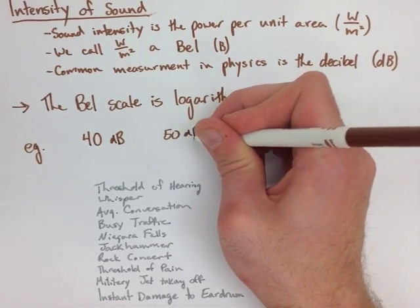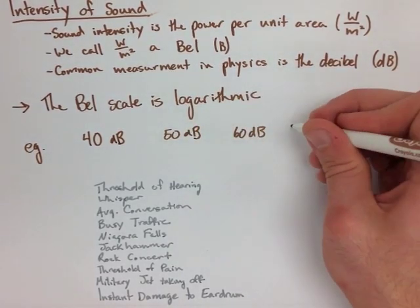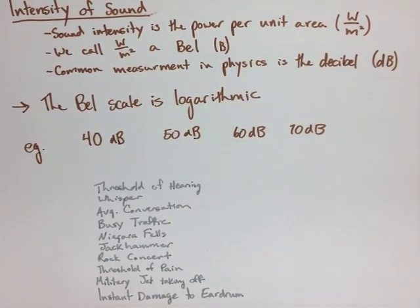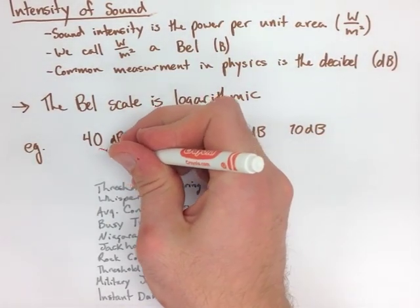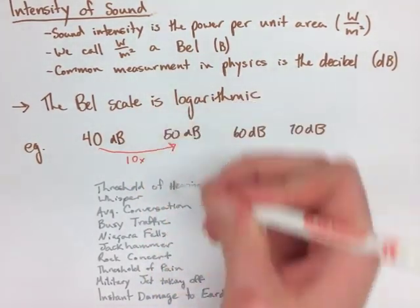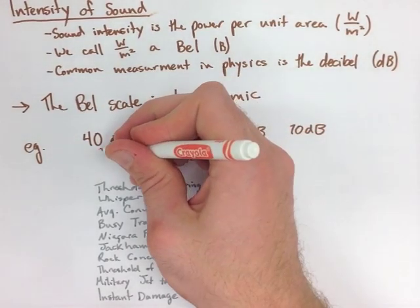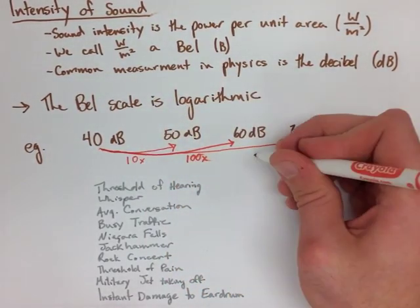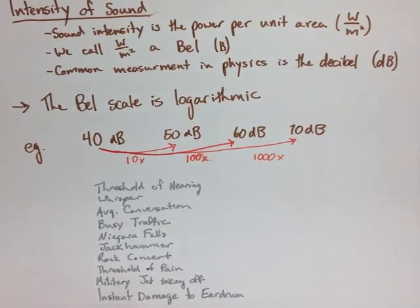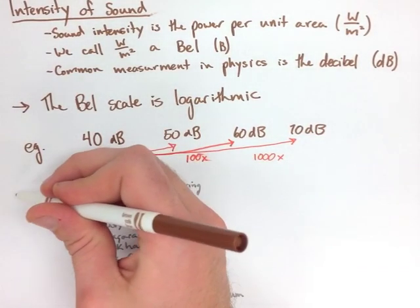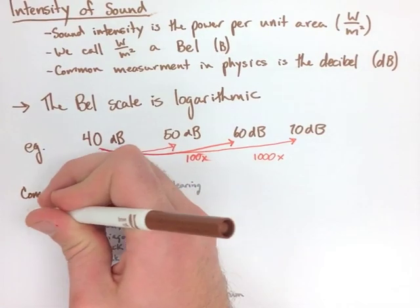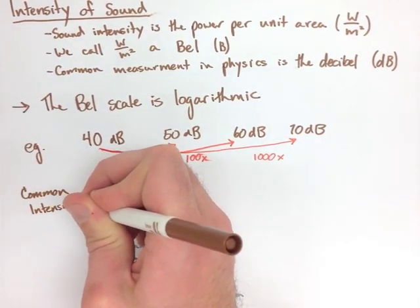So in our example, we have 40 decibels, 50 decibels, 60 decibels, and 70 decibels. Going from 40 decibels to 50 decibels, it's 10 times stronger. Going from 40 decibels to 60 decibels, it's 100 times stronger. Going from 40 to 70, it's 1,000 times stronger. So you have to be careful that you're going up by the right number.